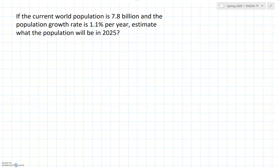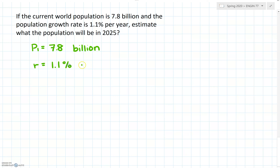The given information here is our initial population — let's call that p1 — our starting population is 7.8 billion, and our rate of change r is 1.1 percent per year.